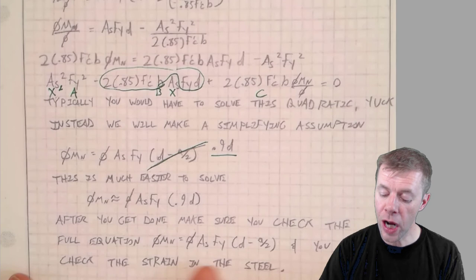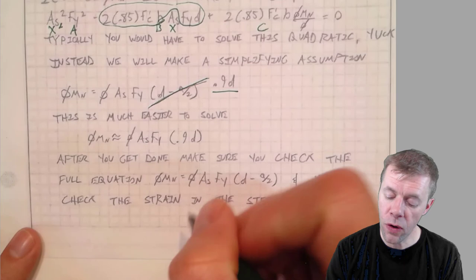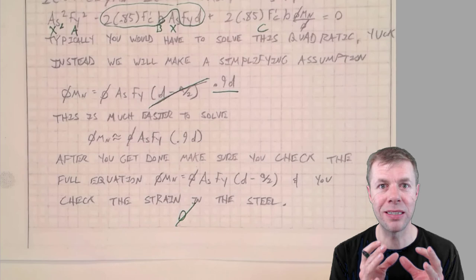We're going to check and make sure this is right, and we also are going to check the strain in our steel to make sure that our phi is correct. And I'll tell you a secret: this is how you make design easy. This is how you become an awesome designer—by seeing these simplifications in very complicated problems.